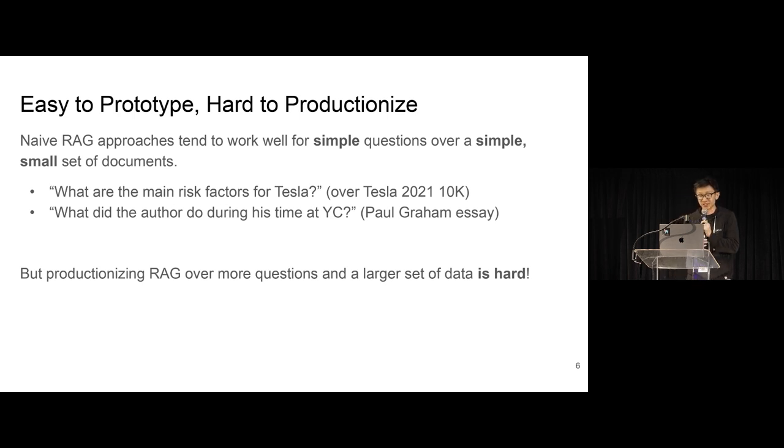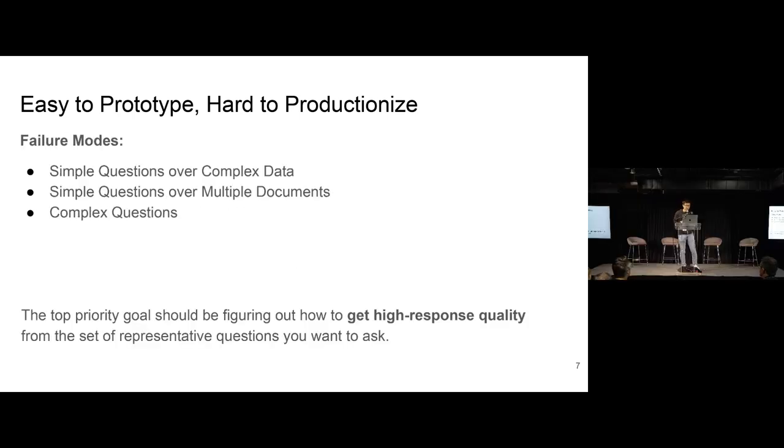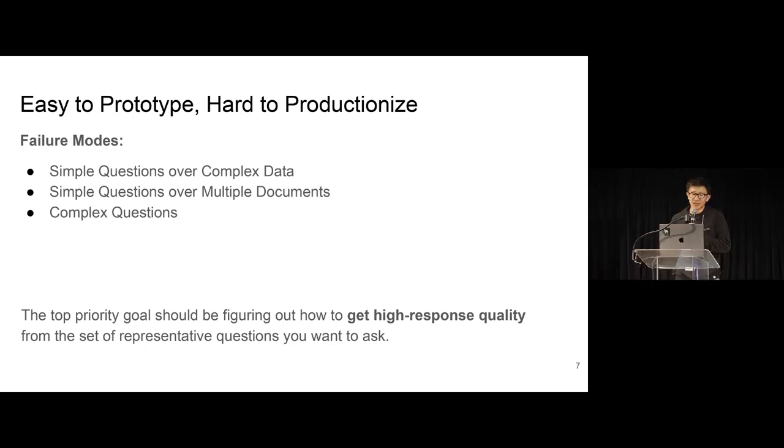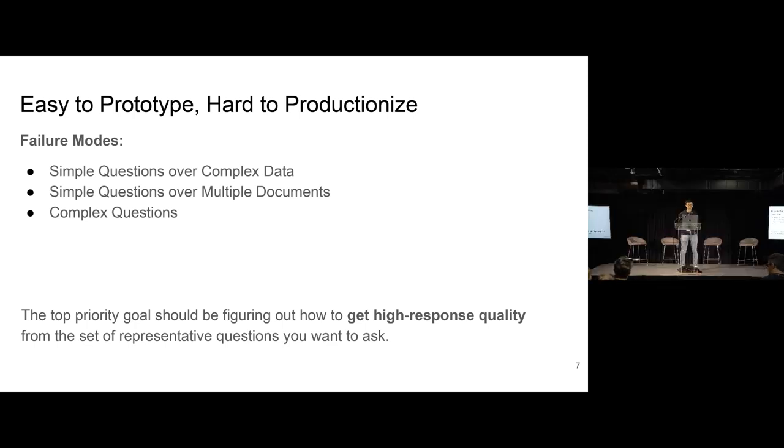However, productionizing RAG over more questions and a larger set of data is a lot more challenging. Some of the failure modes that we see talking to a lot of developers within the enterprise include the following failure modes. This includes simple questions over complex data. So even if your question is still simple, if the data itself is complicated, you might not be able to surface the right answer all the time. It might be hallucinating an answer for you. And we'll define what complex data means in just a bit.